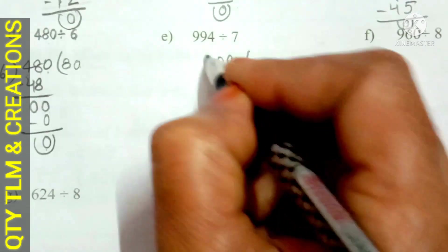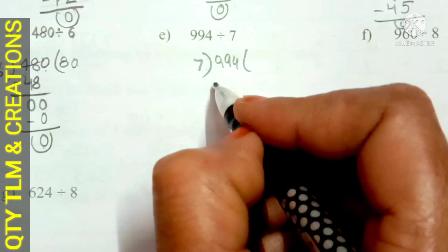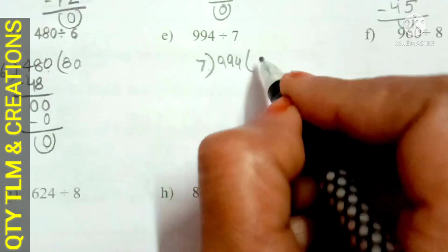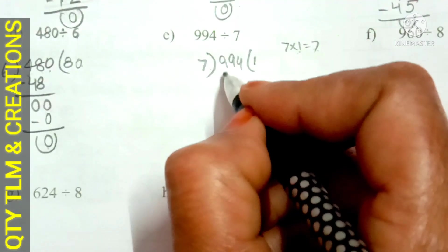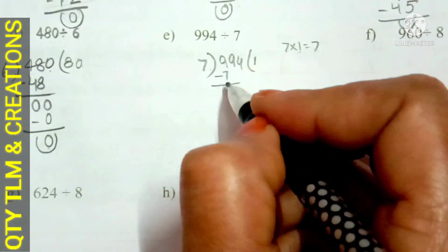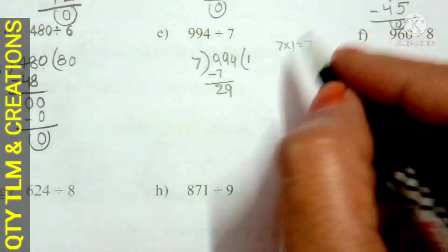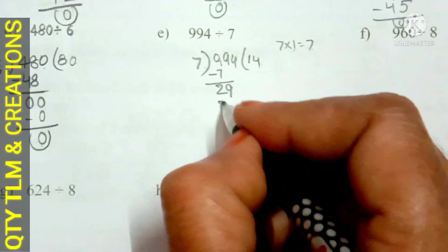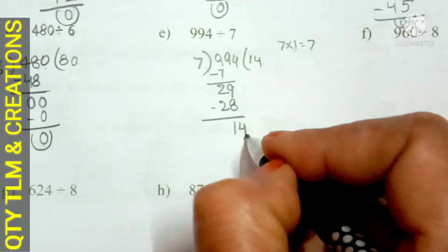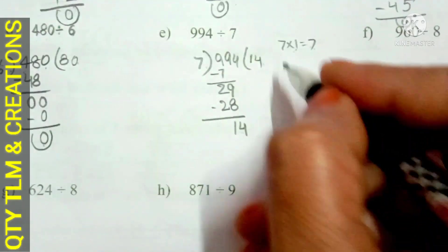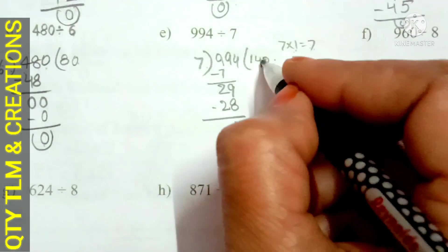Next, E. 994 divided by 7. We start with the hundreds place, which is 9. 7 divides 9 for 1 time; 7 ones are 7. Write 1 in quotient. Subtract 7 from 9, we get 2. Bring down 9: 29. 7 divides 29 for 4 times; 7 fours are 28. Subtract, we get 1. Bring down 4: 14. 7 divides 14 for 2 times; 7 twos are 14. Remainder is 0, quotient is 142.